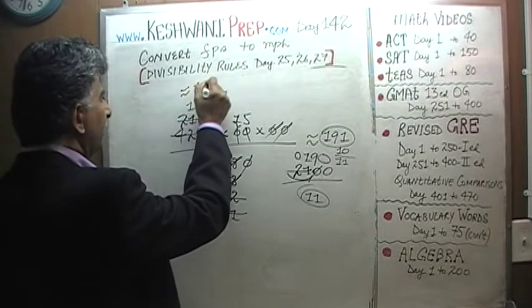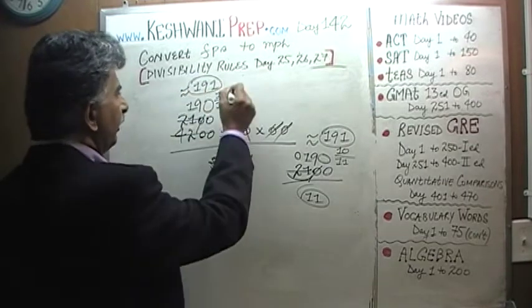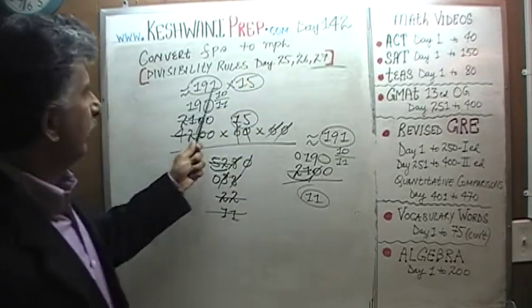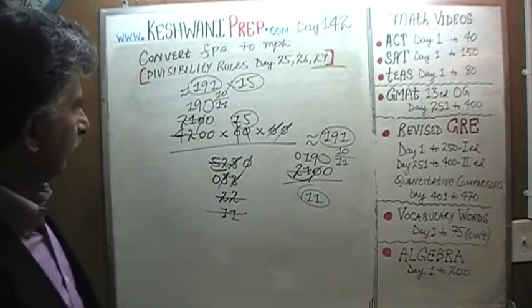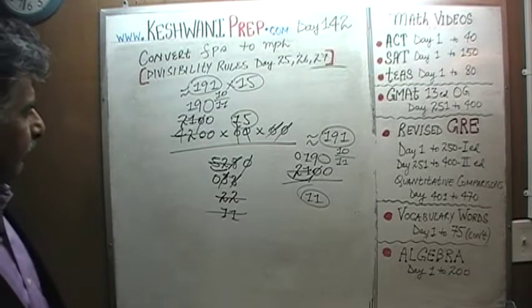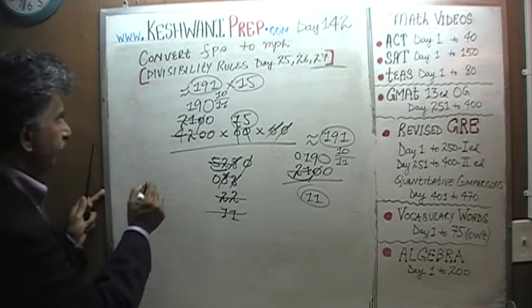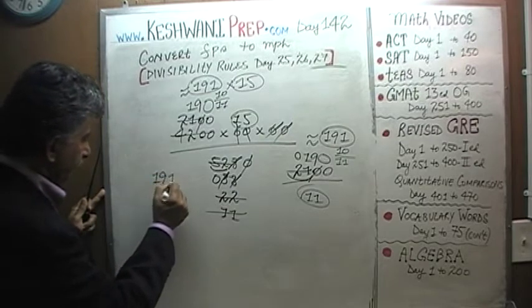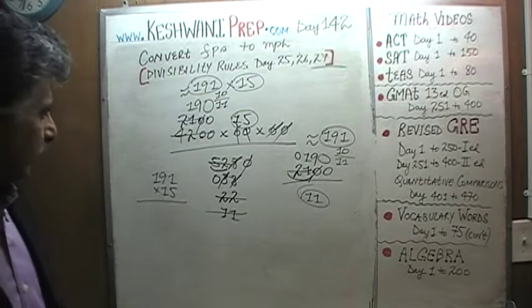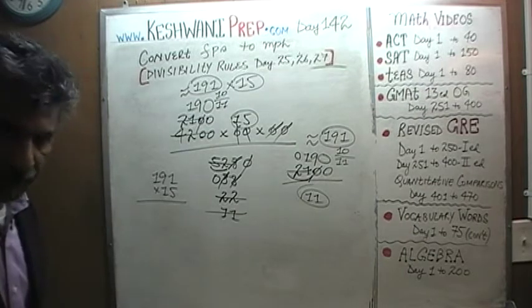So we need to multiply 191 times 15. Answer is 191 times 15. Where can we do it? Let's do it here, 191 times 15, and you will see in a second why I am making such a big fuss about it. Let's do it together, shall we.